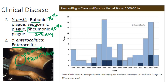Y. enterocolitica basically causes enterocolitis — about one to ten days after ingestion of contaminated food products or water, patients will experience diarrhea, fever, and abdominal pain. This will last about one to two weeks. There is a chronic form that can also develop and persist for months, but that's not common. One thing to note is that sometimes this one looks like appendicitis — you'll see the same symptoms of pain showing up in that area.